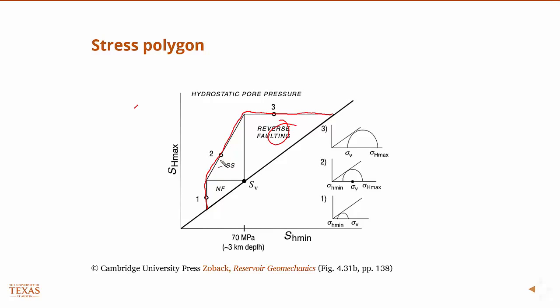If you know it's strike-slip, you're going to be here. If you know it's normal faulting, you're going to be here. This point right here would be the value where SH min, SH max, and SV are all equal to one another.